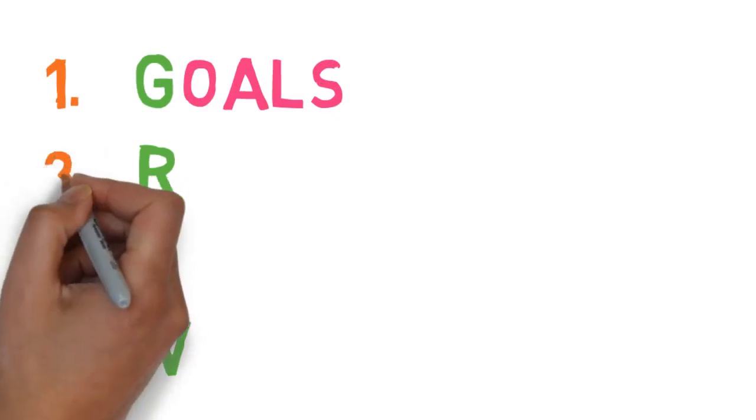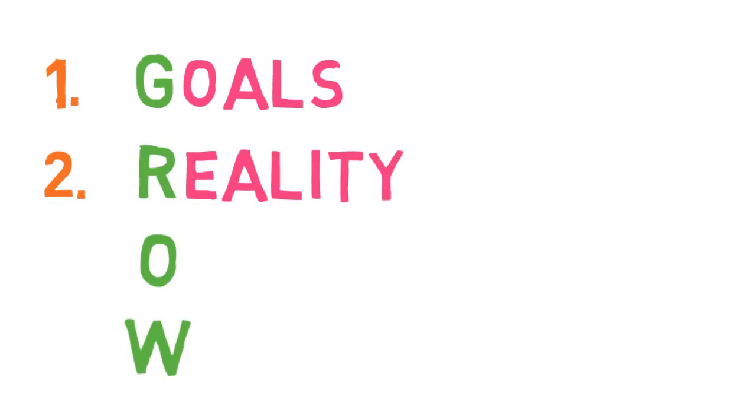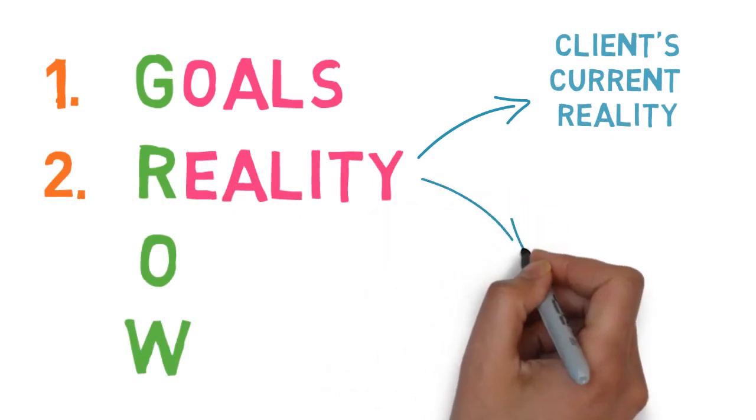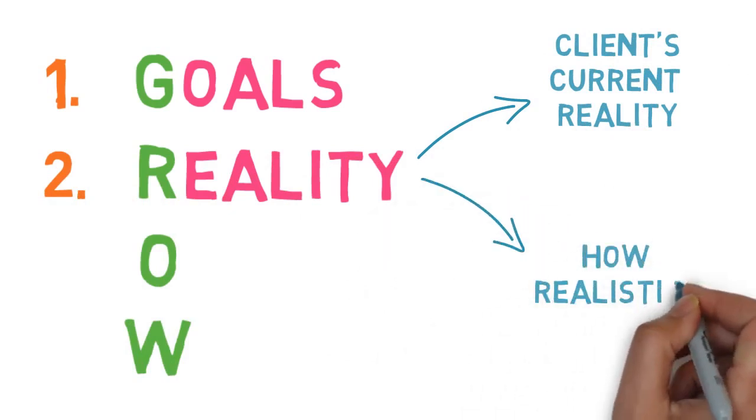R, the second stage in the GROW model, stands for reality. This refers to working out what the current reality may be for the client, as well as to assessing how realistic their chosen goals are.